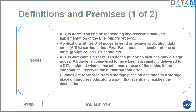Applications utilize DTN nodes to send or receive application data units carried in bundles — the protocol data units of Bundle Protocol. Each node is a member of one or more groups called DTN endpoints. A DTN endpoint is a set of DTN nodes; as a first-order model, you can think of a DTN endpoint as functionally analogous to a socket address, and a DTN node as analogous to a host or router. A bundle is considered successfully delivered to a DTN endpoint when some minimum subset of the nodes in the endpoint has received it without error.